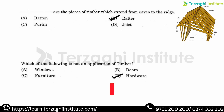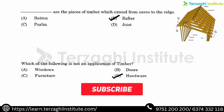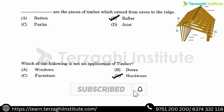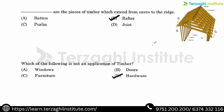The piece of timber which extends from the eaves to the ridge of a roof — from the eaves edge going up to the ridge — the part that goes from eaves to ridge is called the rafter. So the answer is rafter.